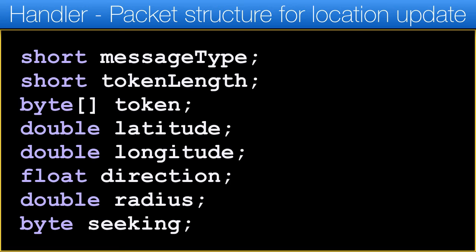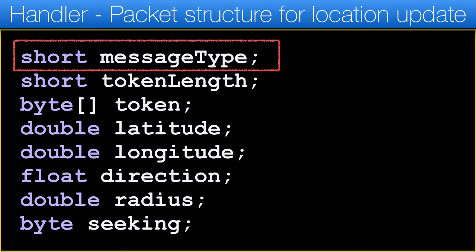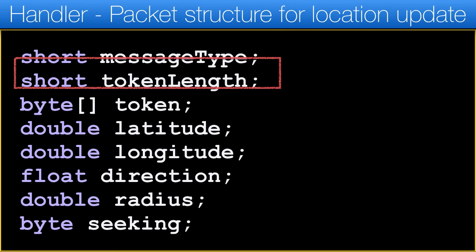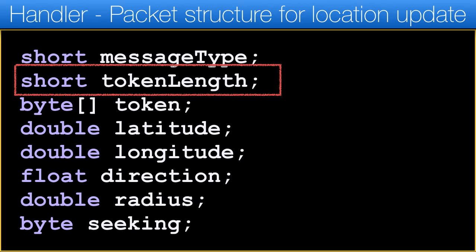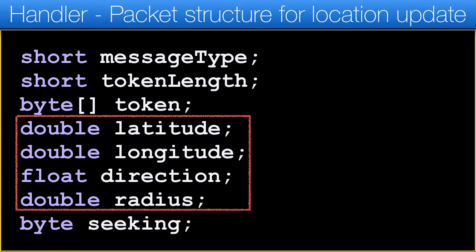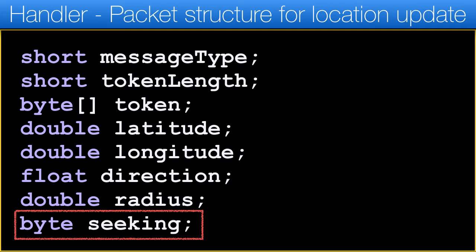But first let's review the communication protocol. This is the binary structure we will use when receiving a request on the server for a location update — so when a user changes his current location we will send this data. The message type should be 1 for a location update from the user. The length of the user token string is followed by a byte array of the token length representing the string. I used bytes instead of chars since the token is 100% ASCII, which reduces the packet size further. The location data and the radius/direction of the user follow, then a byte which is set to 1 when we are hailing a taxi, in which case it will seek only available drivers.